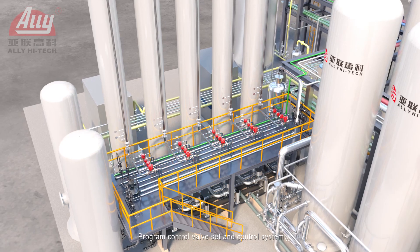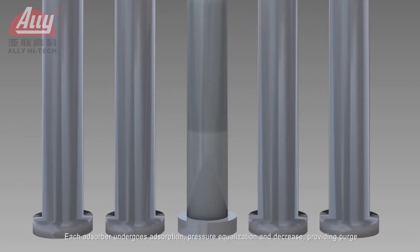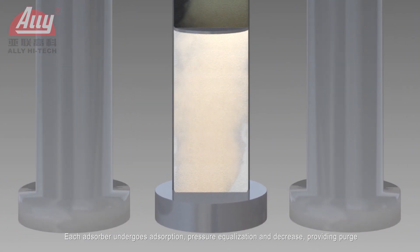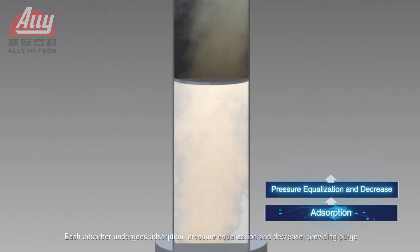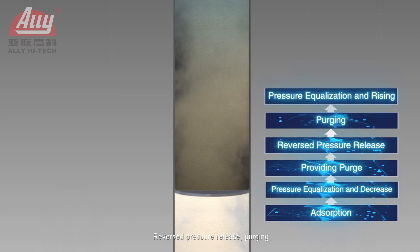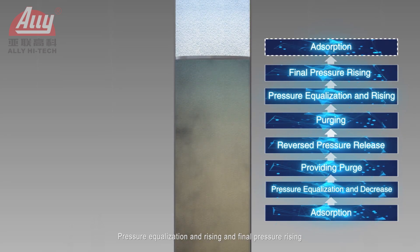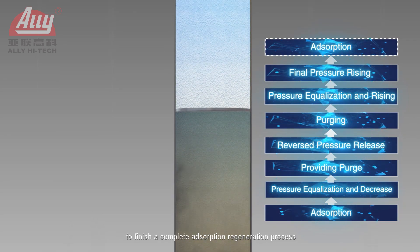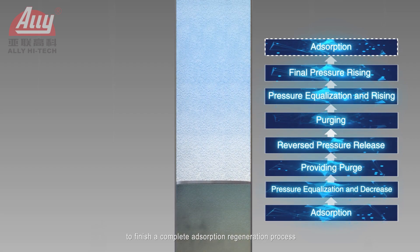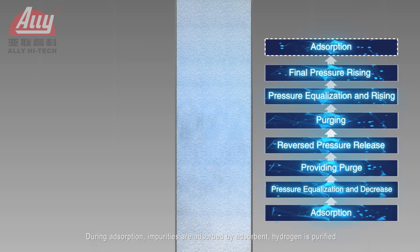Each adsorber undergoes adsorption, pressure equalization and decrease, providing purge, reversed pressure release, purging, pressure equalization and rising, and final pressure rising, to complete a full adsorption-regeneration process. During adsorption, impurities are adsorbed by the adsorbent and hydrogen is purified.